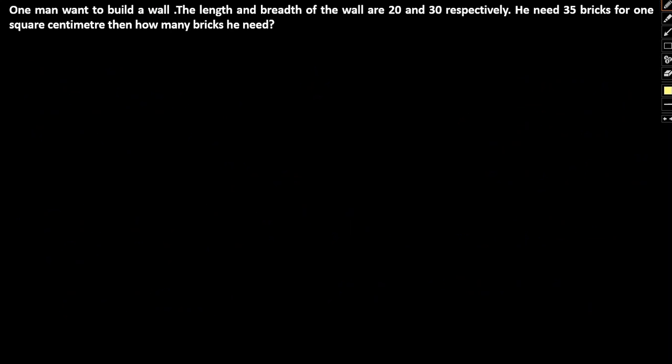The next question is again based on mensuration. One man wants to build a wall. The length and breadth of the wall are 20 and 30 centimeters respectively. He needs 35 bricks for 1 square centimeter. Then how many bricks does he need? So we have length equal to 20 centimeters, breadth equal to 30 centimeters. The area will be 20 into 30 centimeter square, which gives us 600 centimeter square.